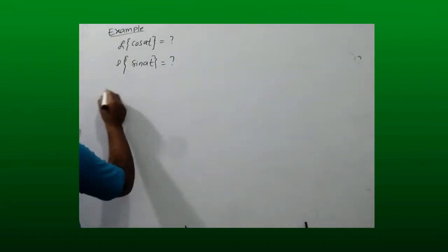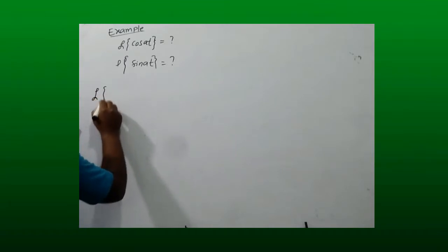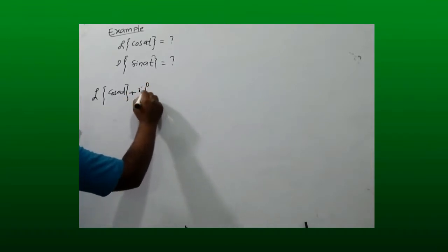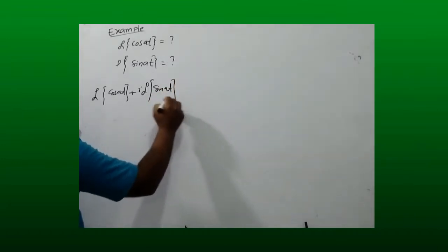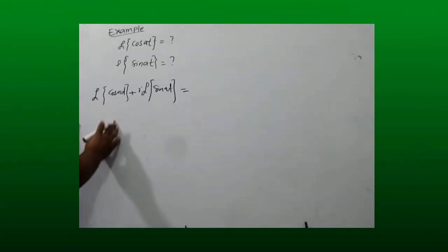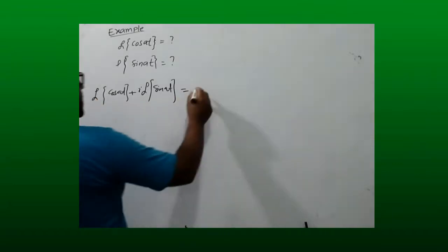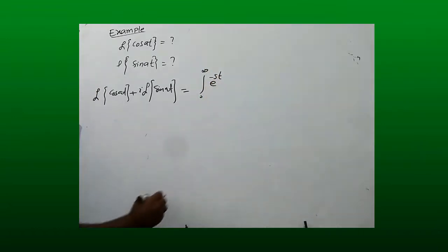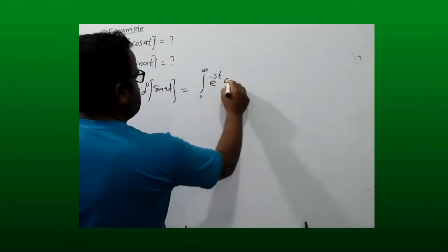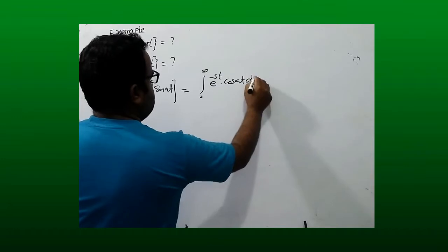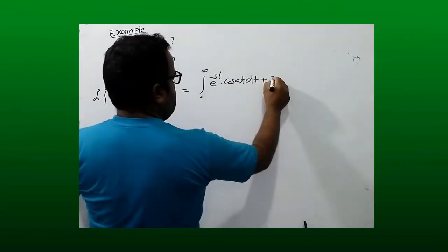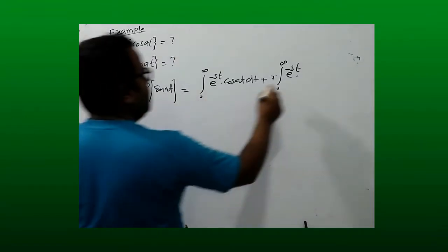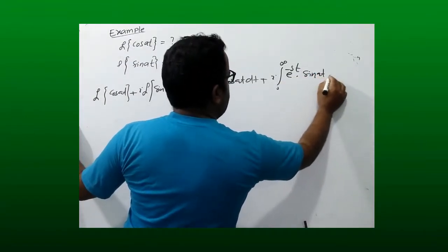We know that L{cos(at)} + i·L{sin(at)} can be set up by applying the definition. L{cos(at)} is the integral from 0 to infinity of e^(-st)·cos(at) dt, plus i times the integral from 0 to infinity of e^(-st)·sin(at) dt.